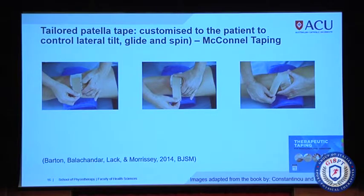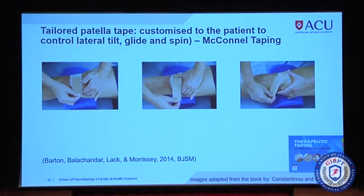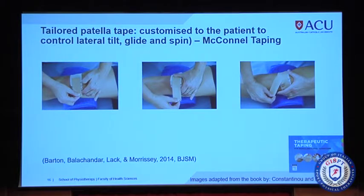The second picture shows a medial glide being performed. Once again, if the patella is sitting laterally, you add the medial glide. The last picture shows rotation of the patella: if the inferior pole is rotated laterally, you rotate it medially; if it's rotated medially, you rotate it laterally. More often you will find it in the lateral position. This is what is meant by the tailored taping technique — assessing the patient and then using taping that is individualized to their specific presentation.